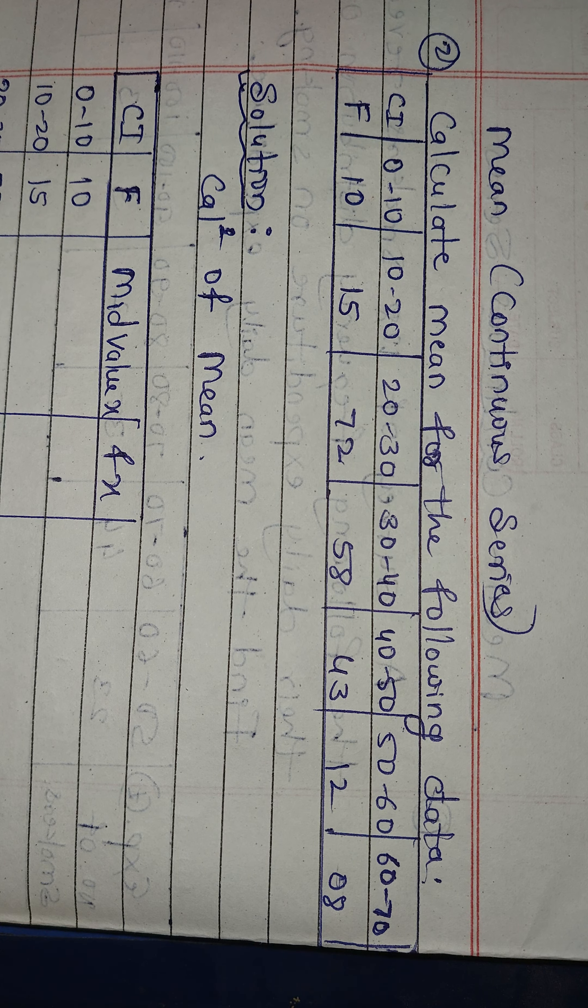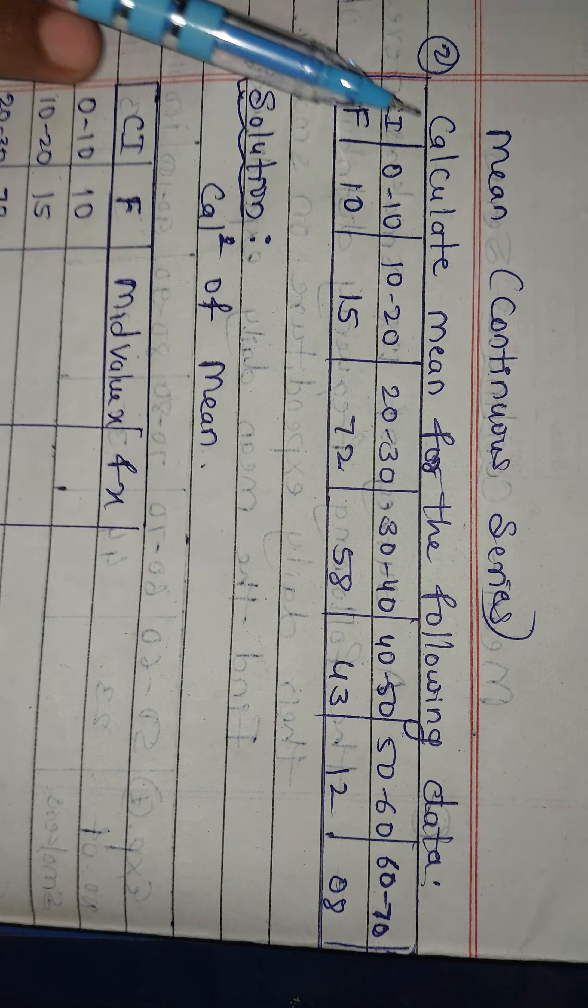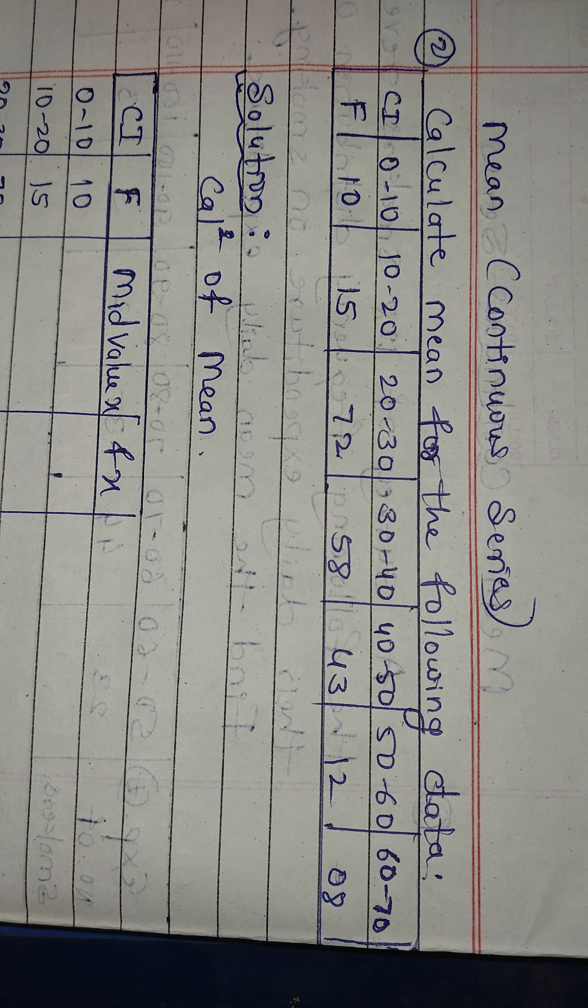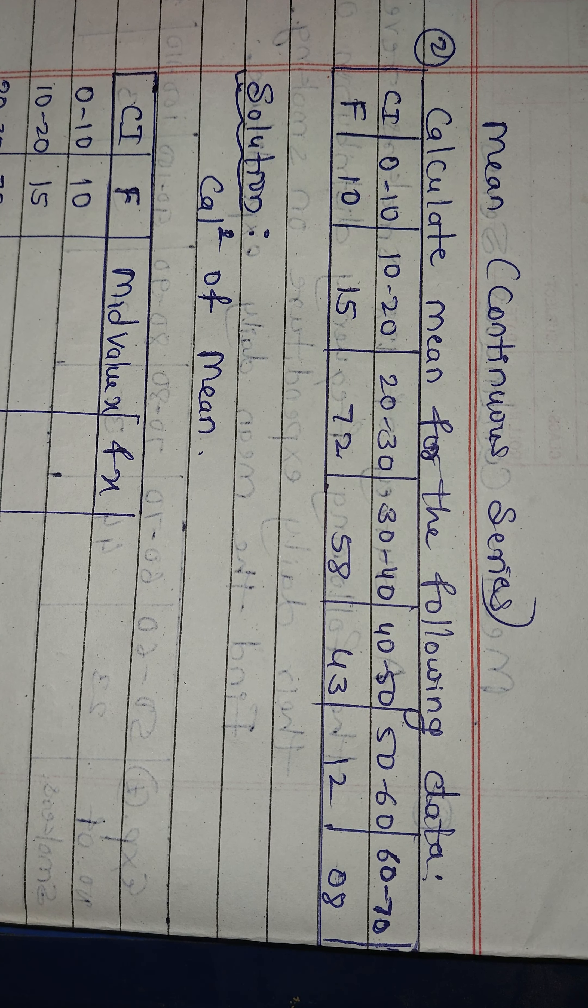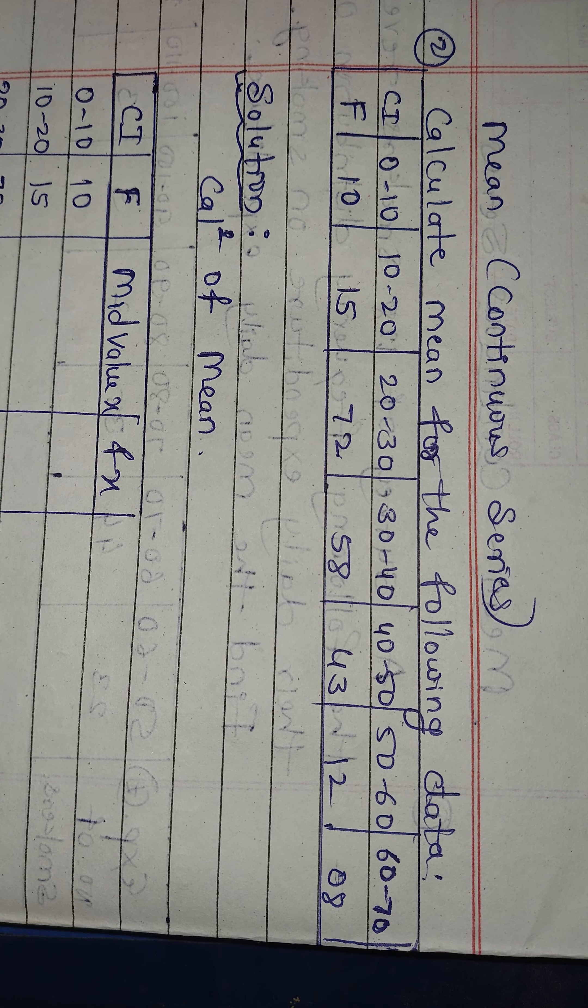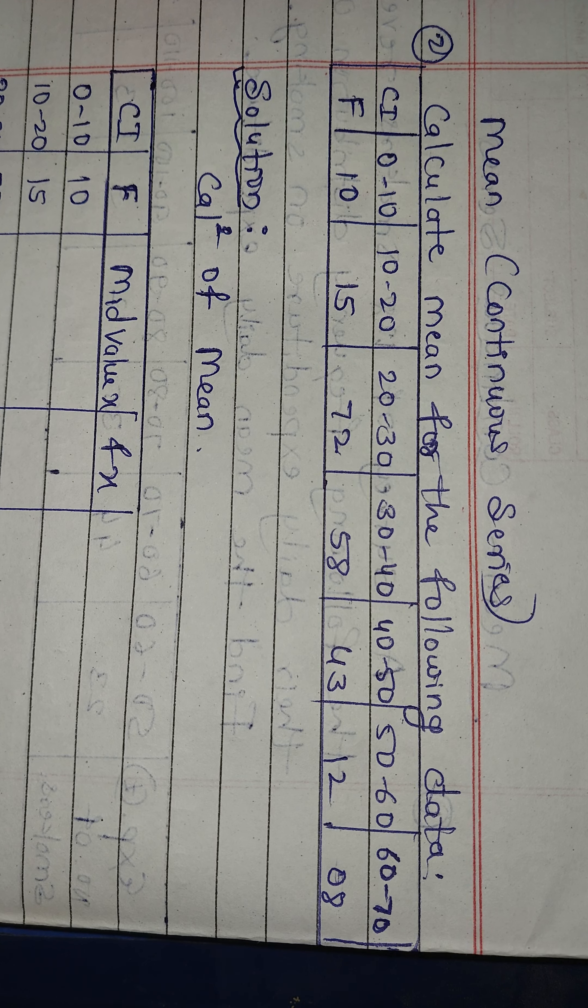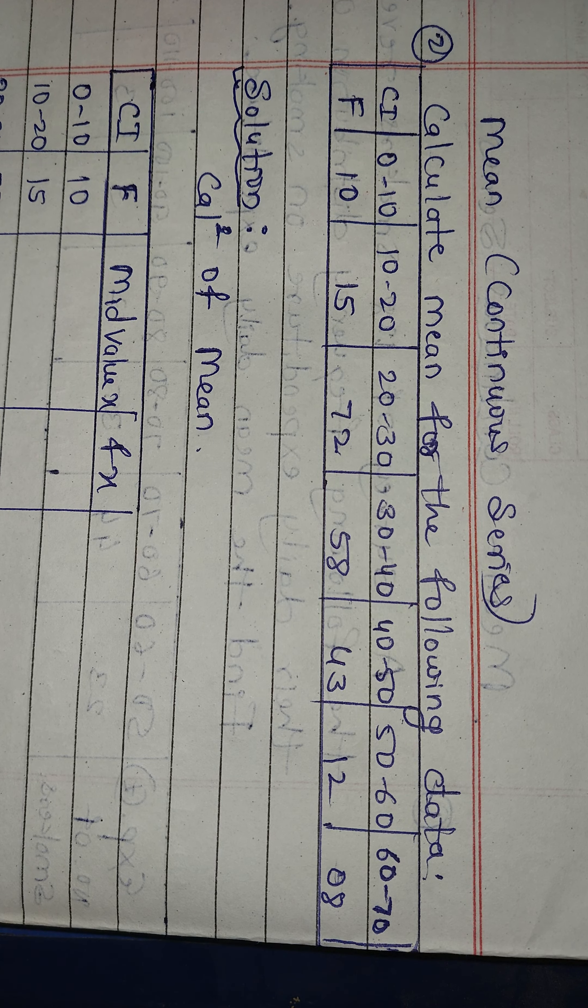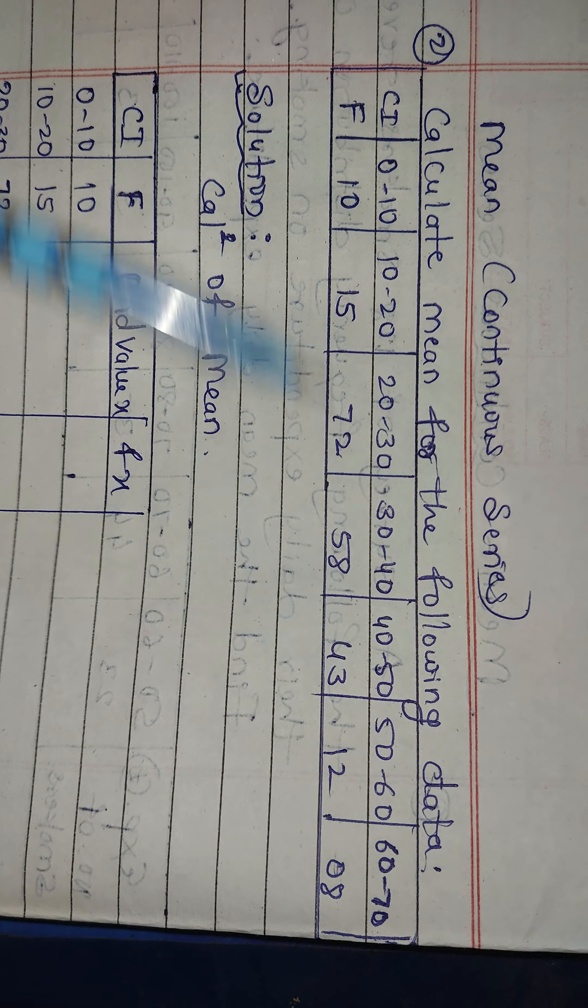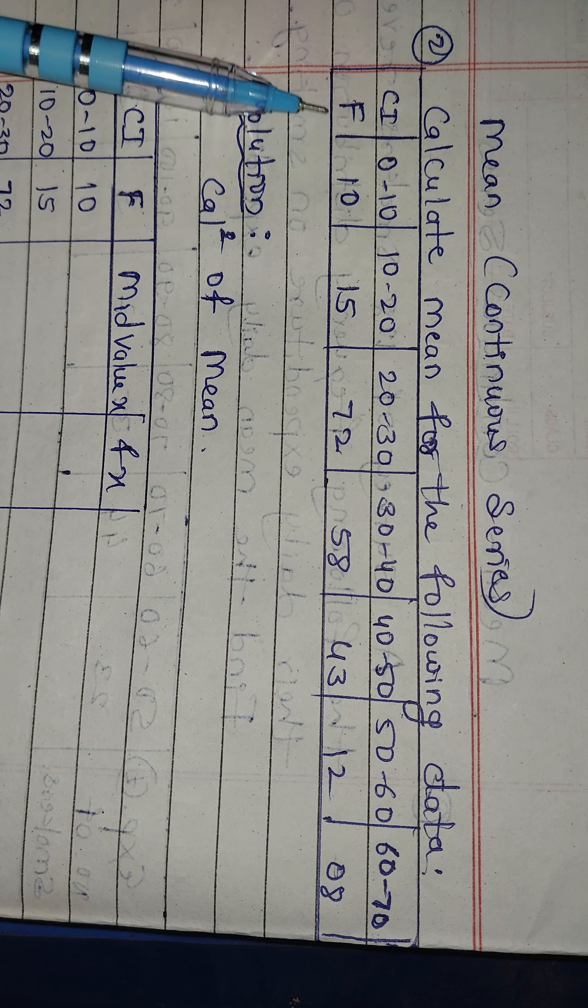Hello namaskara, so this is my second part video. Part one had one problem. See here the question: calculate mean for the following data. CI is the class interval.